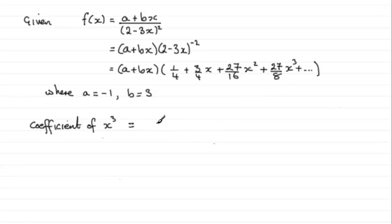So the coefficient of x cubed is just going to be when you have a multiplied by 27 eighths x cubed. So that's going to be 27 eighths times a, a being minus 1.